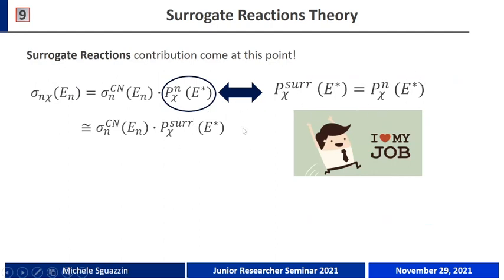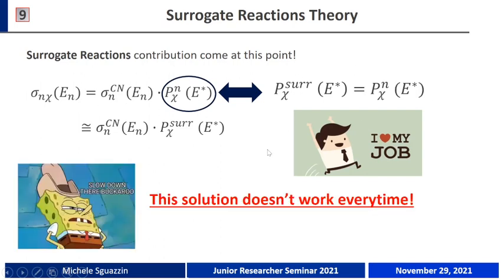In this case, we have all the elements to calculate the neutron-induced reaction cross-section and we are happy. The problem is that if we try to do this every time, sometimes things work, and sometimes we get an important mismatch between the neutron-induced reaction cross-section measured in this way and in the case of surrogate reactions. So we cannot use this solution every time — it doesn't work every time.